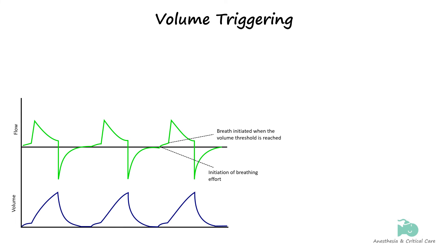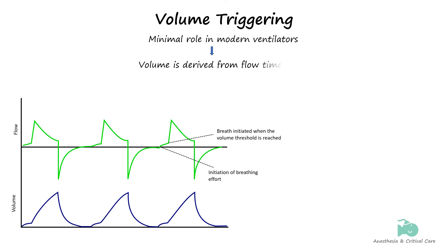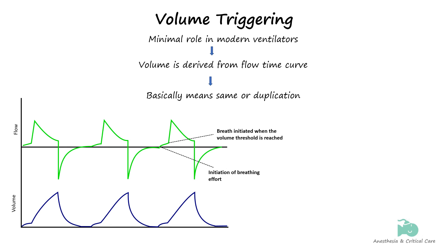With flow and volume triggering, one would logically think about volume triggering being used in the ventilator, but it plays a minimal role in modern ventilators. This is because under most circumstances a modern ventilator never measures volume directly, but rather calculates it from flow over time. So if the ventilator is measuring flow and then converting it into volume, it would be easier and more comfortable for the patient to just trigger breaths according to flow before a certain volume is attained.